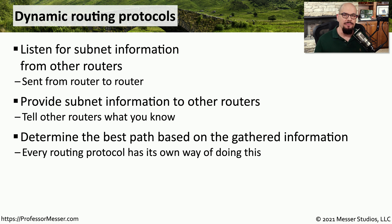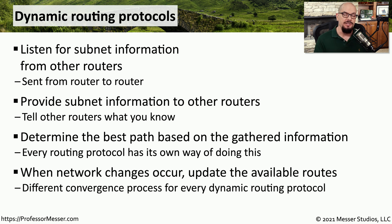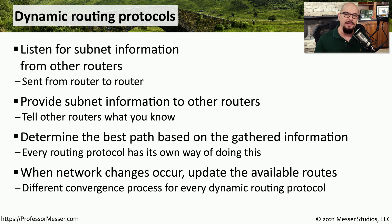There are many different dynamic routing protocols, and each protocol has its own way of determining how it should build this table and determine what the best route is between point A and point B. Another important task of these routing protocols is to work around any outages that may occur. Our networks are constantly changing, and if suddenly a route becomes unavailable, the router performs a convergence process where it recompiles the routing table to work around that particular outage.